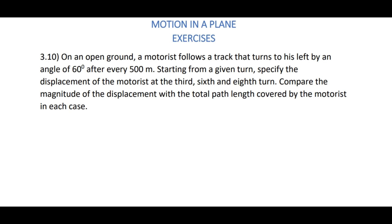Hello students. In this video, we are going to discuss problem 3.10. On an open ground, a motorist follows a track that turns to his left by an angle of 60 degrees after every 500 meters. Starting from a given turn, specify the displacement of the motorist at the 3rd, 6th, and 8th turn. Compare the magnitude of the displacement with the total path length covered by the motorist in each case.